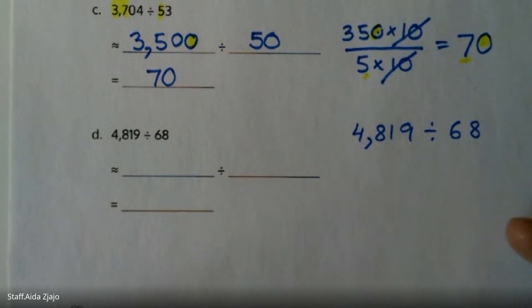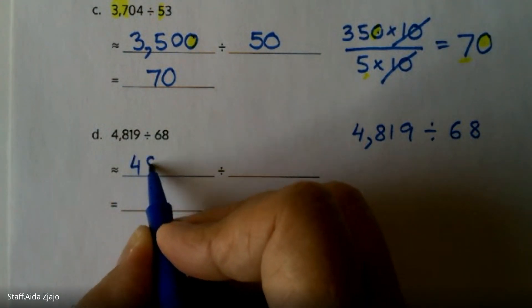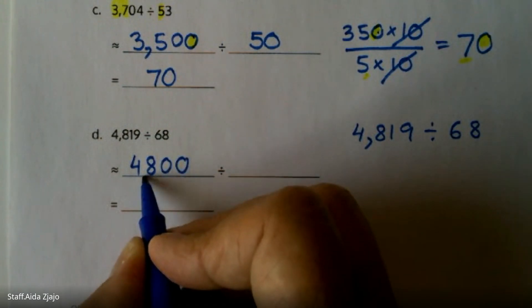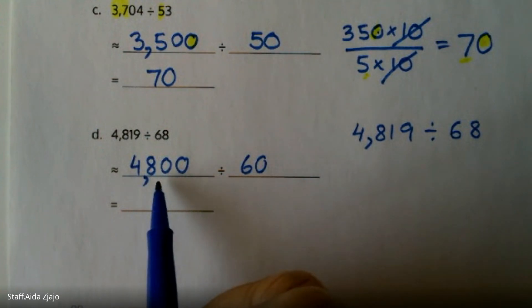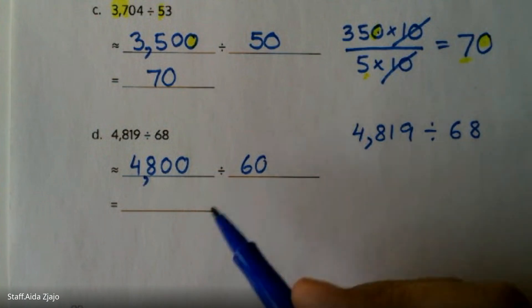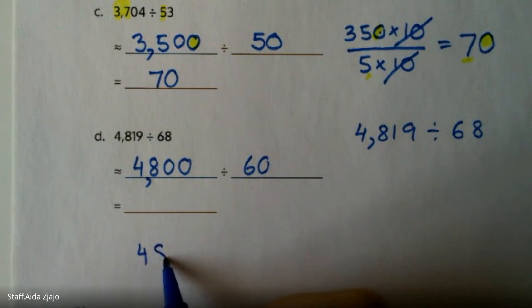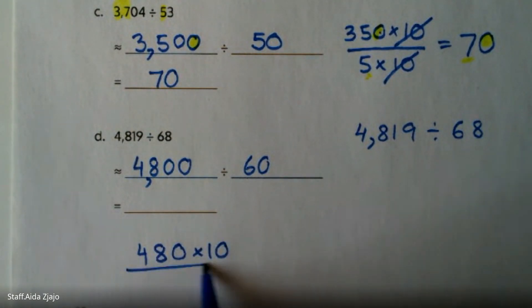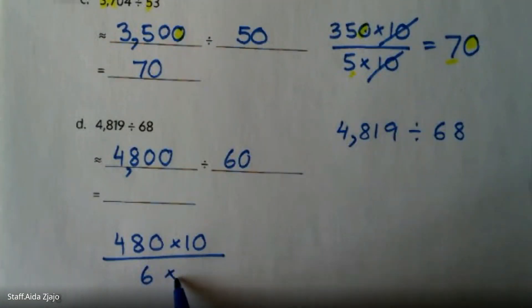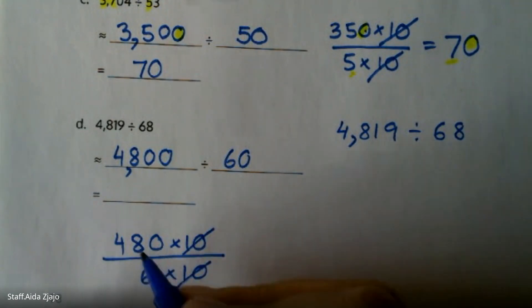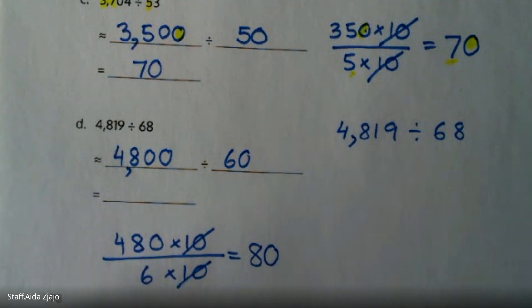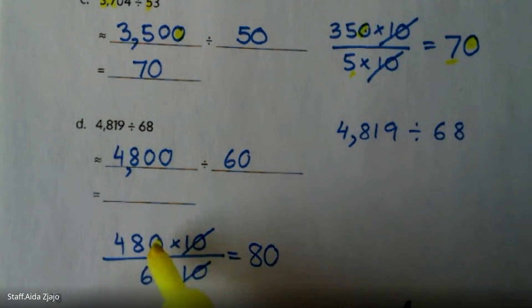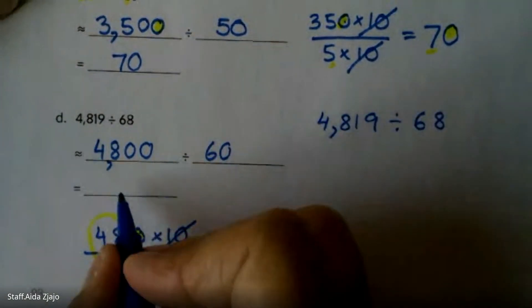If I write here 4,819 divide by 68 one more time, I could use 4,800 and I will leave this to be 60 because 6 times 8 is 48. If I divide, so 480 times 10 divided by 6 times 10, 10 divided by 10 is 1. And now 48 divided by 6 is 8, and then add 0 is 80. So this estimate is about 80.